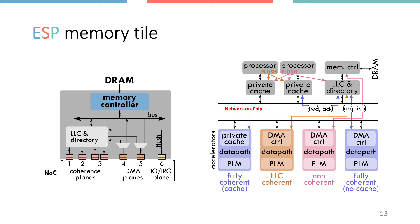First, it can use fully coherent cache accesses with the optional L2 cache in the socket, which is good if you can exploit locality. Second, it can access data in a non-coherent mode bypassing all cache levels, and the ESP driver handles flushes to maintain data consistency. Third, it can use an LLC-coherent DMA mode in which L2 caches are bypassed but data are accessed in the last-level cache, saving energy by not going to external memory. A fourth variant — the fully coherent DMA — triggers recalls from the last-level cache to private caches when data are owned by a processor cache, supporting fully transparent operation of accelerators without a private cache.